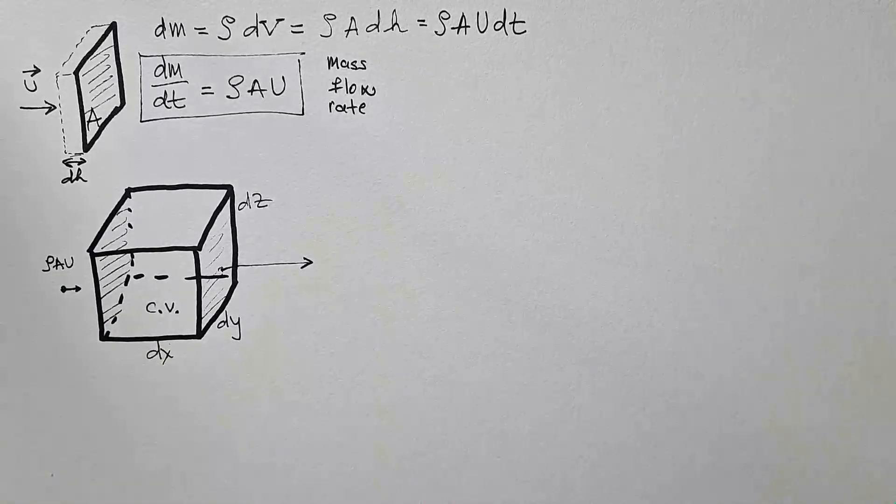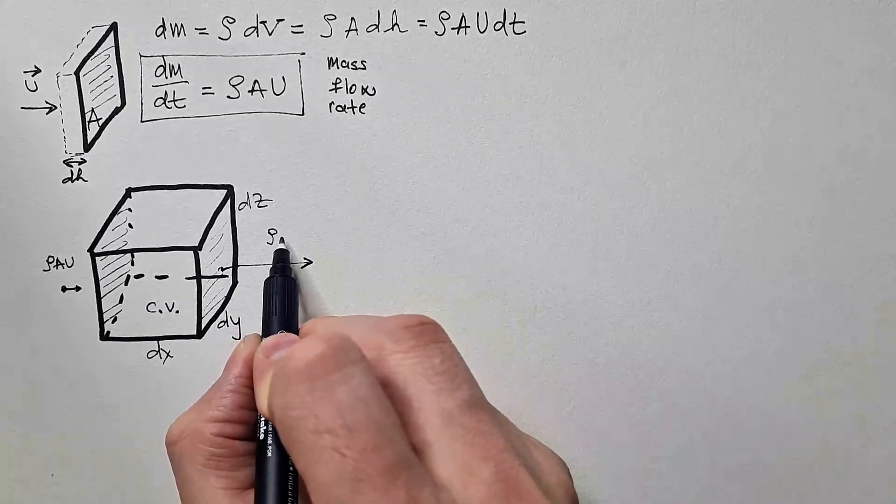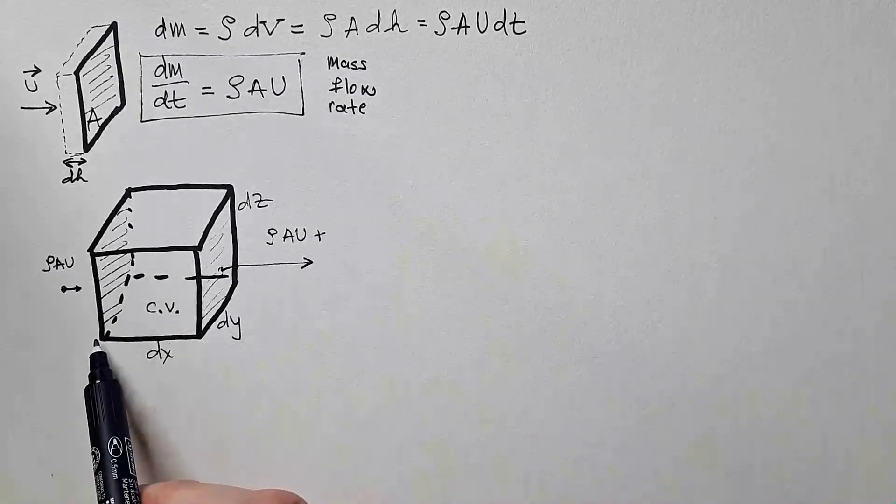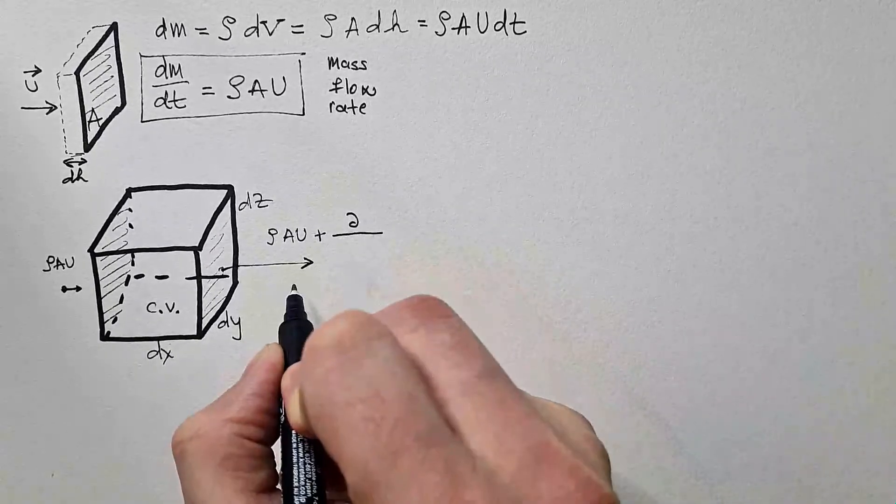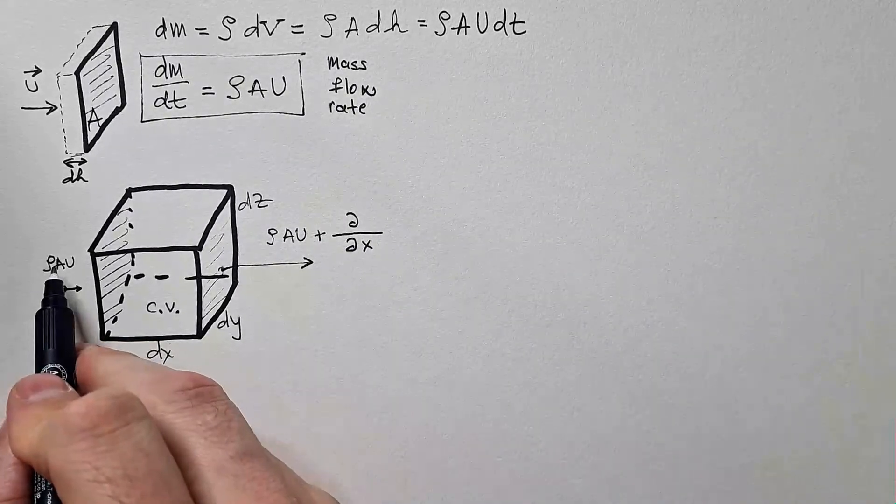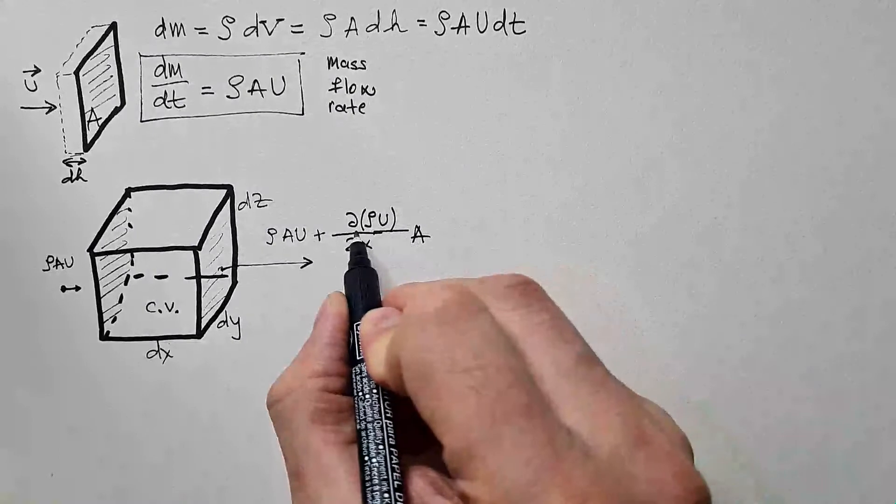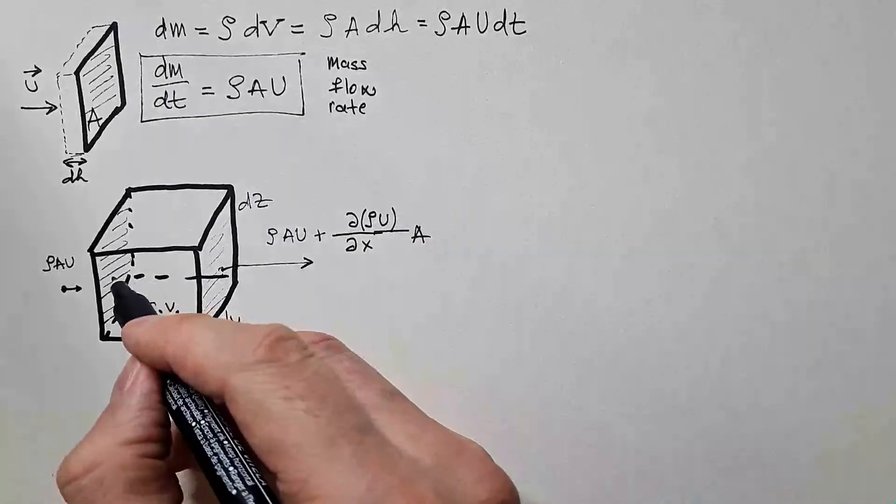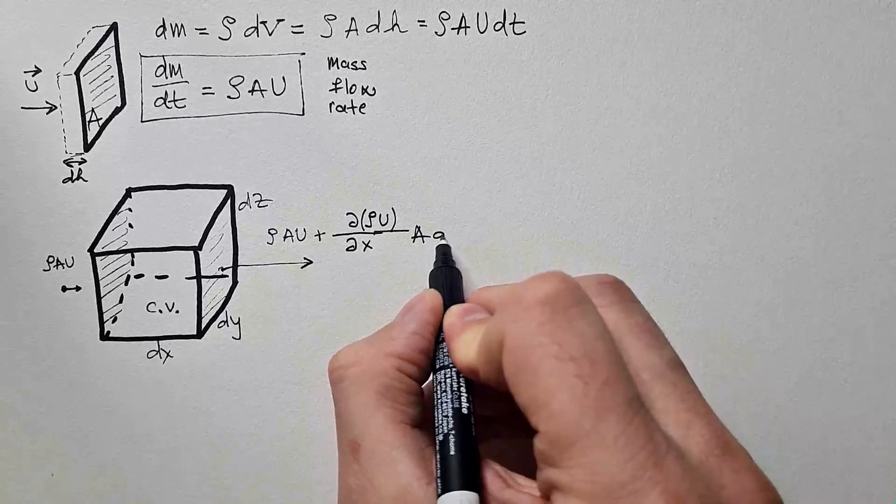In other words, mass flow rate here is equal mass flow rate here, which is ρ A u, plus rate of change of ρ A u along dx times dx. So rate of change along the x direction of this quantity, ρ A u. But I write it like this because A is constant. Namely, surface area of this side is equal to surface area of this side, so it can go in front of differentiation, times dx.